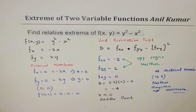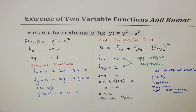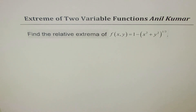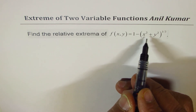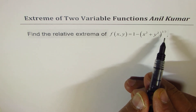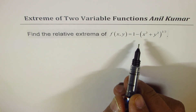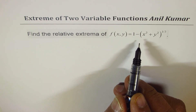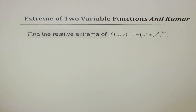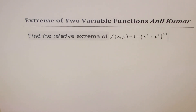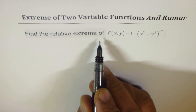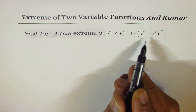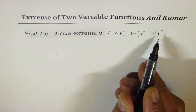Now let's take one more example — hopefully involving a maximum. Find the relative extrema of f(x,y) = 1 - (x² + y²)^(1/3). Please pause and try it yourself before looking at my solution.